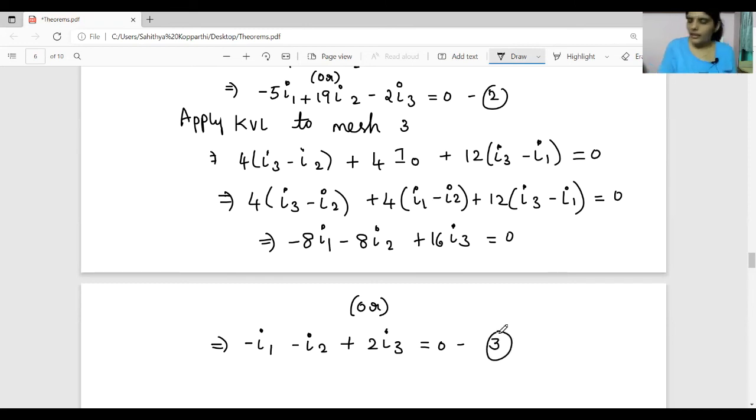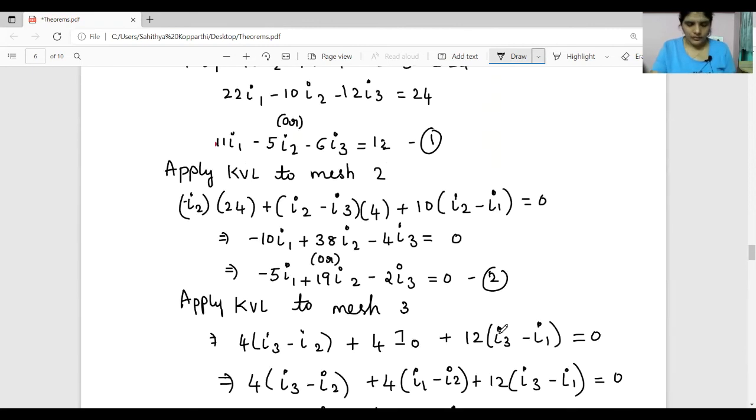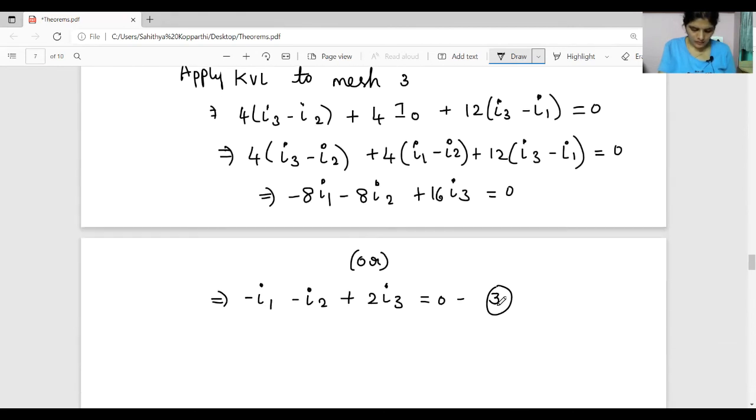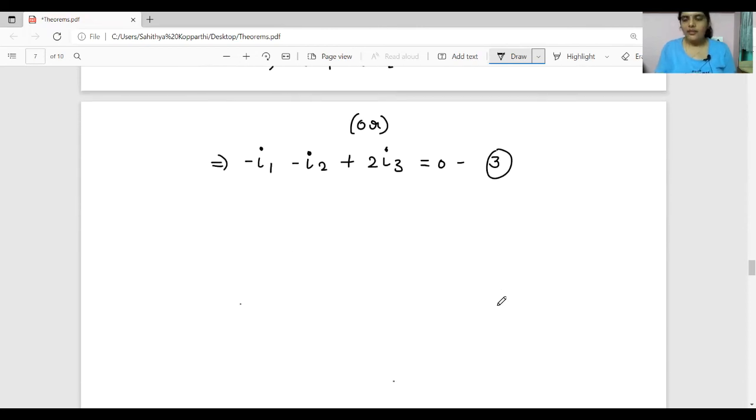Let us verify the equations again. Solving all three equations, you will get I1 = 2.25 amperes, I2 = 0.75 amperes, and I3 = 1.5 amperes.